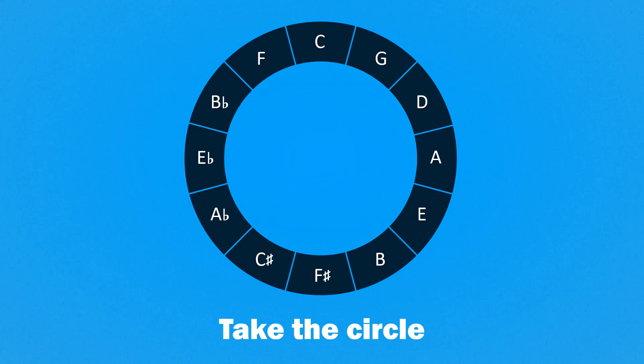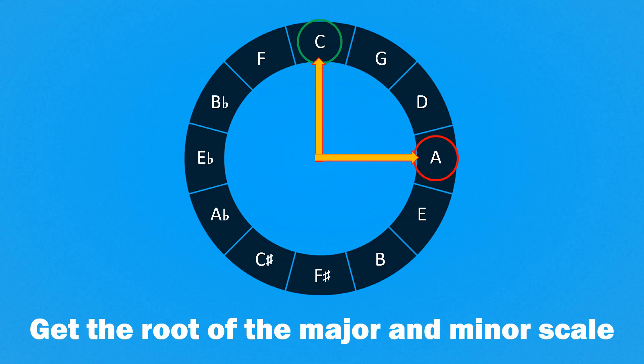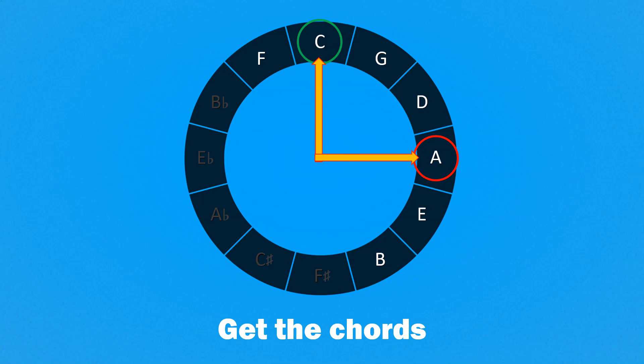So in order to get the notes of the scale and the quality of the chords, there is a simple trick. Get the circle, get the root of the major and relative minor scale — remember, a quarter of an hour — then identify the major and minor chords. The two neighbor chords of the root chord will be major chords, the two neighbor chords of the relative minor chord will be minor chords, and the last will be a diminished chord.